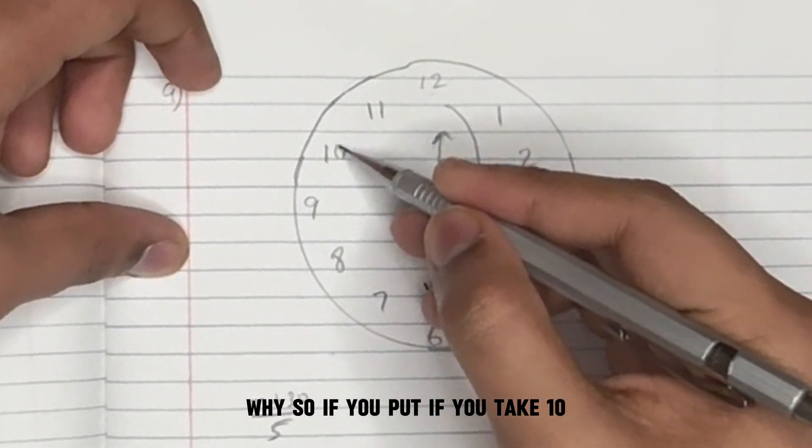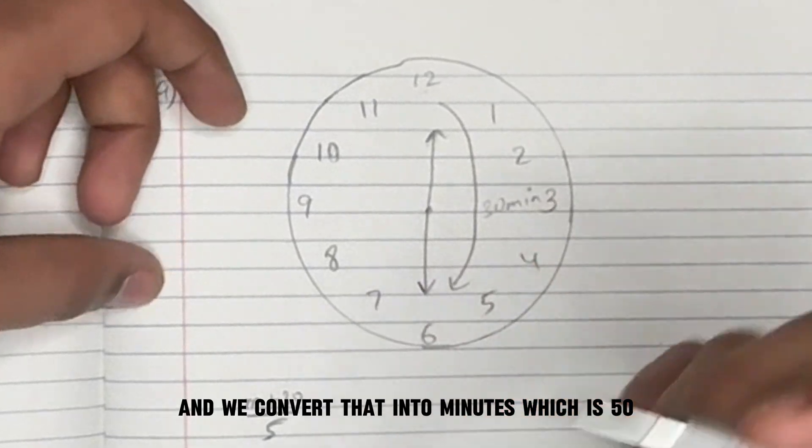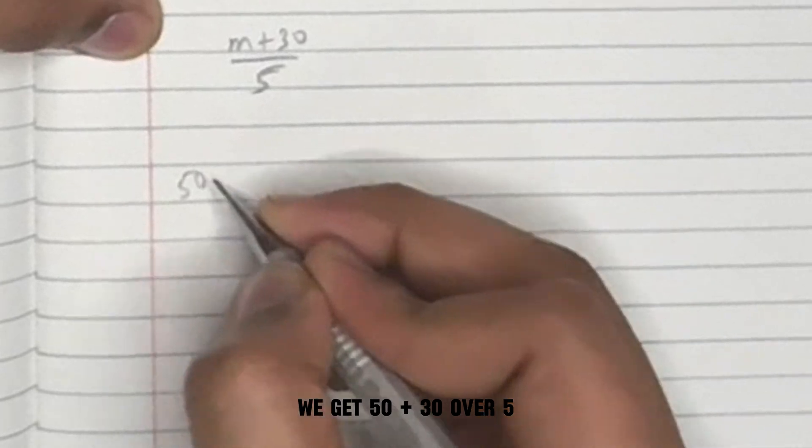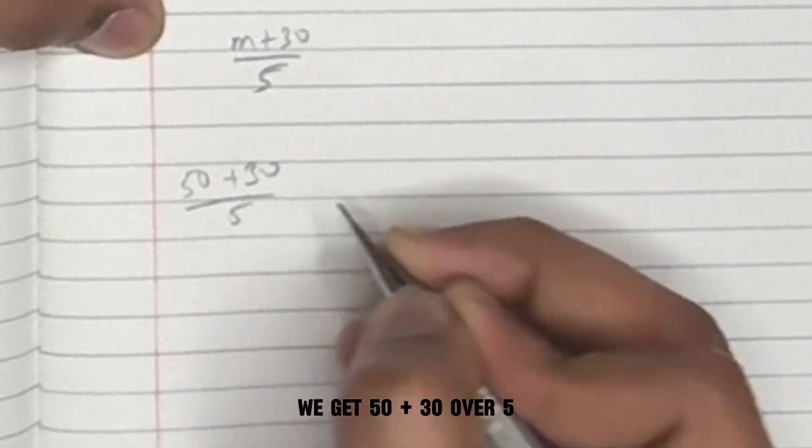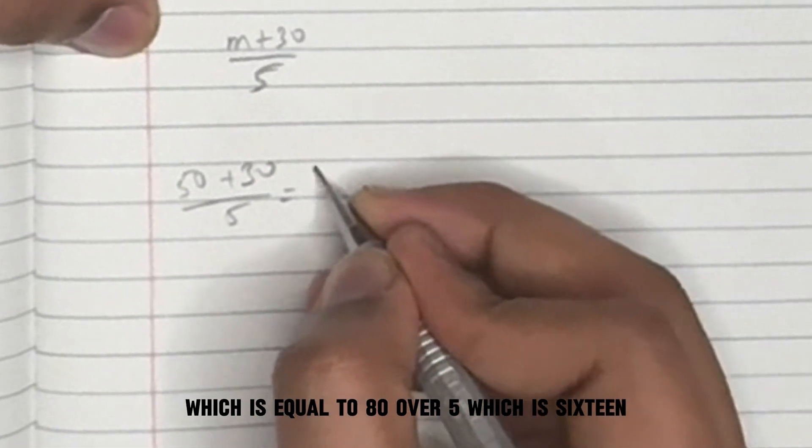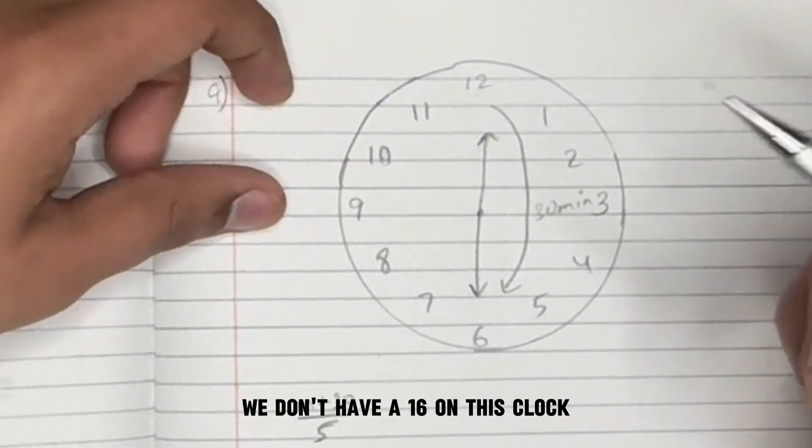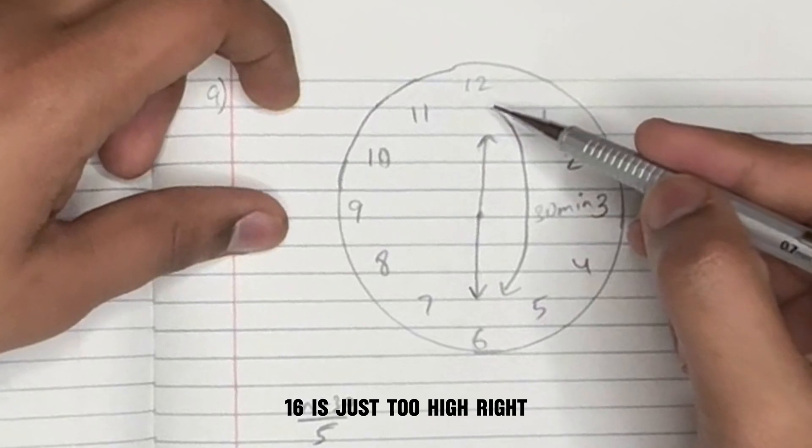So if you take 10, and we convert that into minutes, which is 50, we get 50 plus 30 over 5, which is equal to 80 over 5, which is 16. We don't have a 16 on this clock. 16 is just too high.